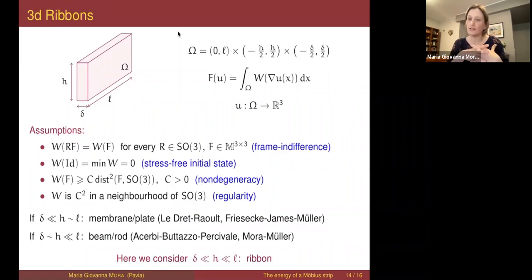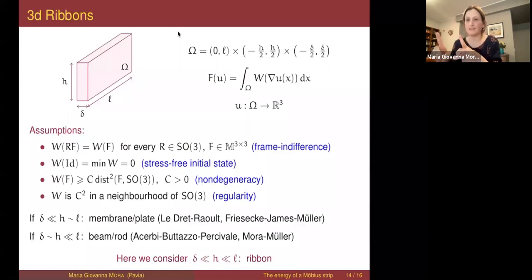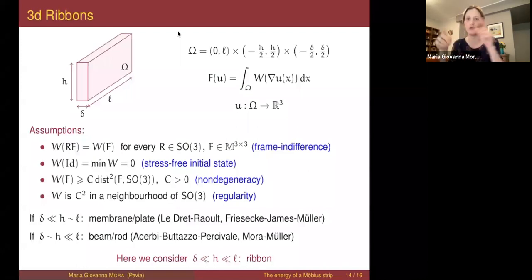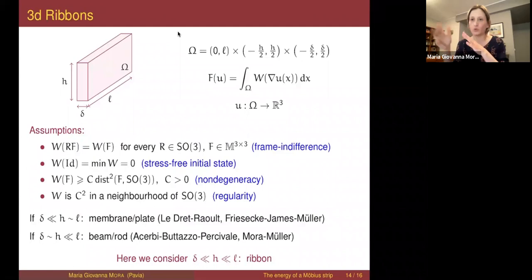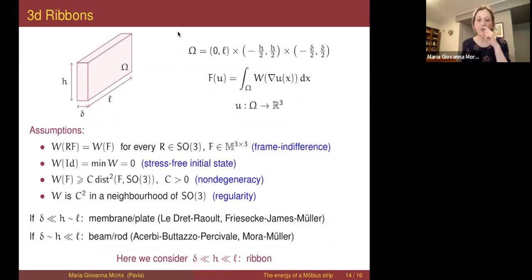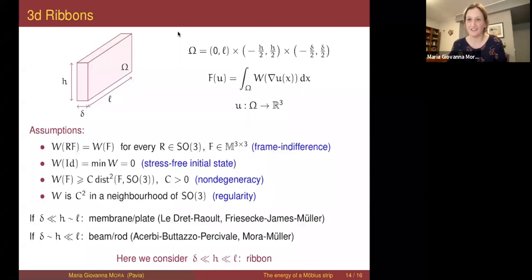Ribbons are very much studied in the physics and engineering literature because they are common in the real world. This seems to be the right setting for our problem related to the Sadowski functional, because what we did was to take two Gamma limits sequentially: starting from 3D elasticity, send the thickness to zero to get 2D Kirchhoff, then in Kirchhoff send the width to zero to get a 1D model. This should correspond to having two parameters where one goes to zero faster than the other. These structures are interesting because their behavior is intermediate between beams and plates.